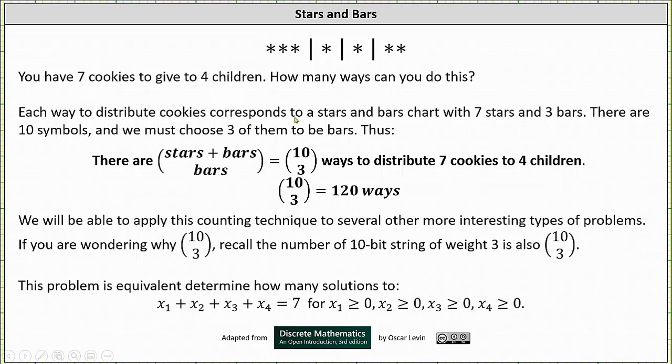Each way to distribute cookies corresponds to a stars and bars chart with seven stars and three bars. There are a total of 10 symbols, and we must choose three of them to be bars, and therefore there are 10 choose 3 ways to distribute seven cookies to four children, which is 120 ways.